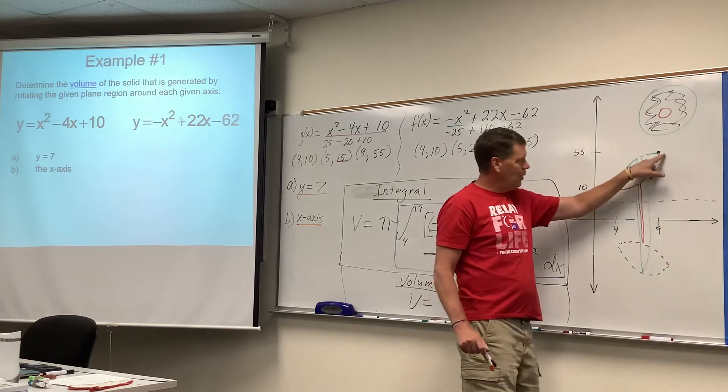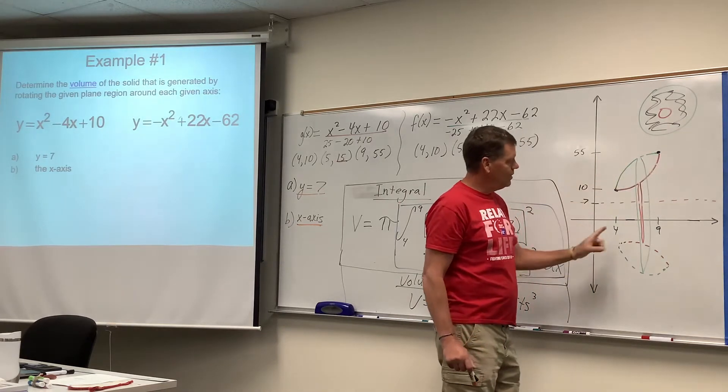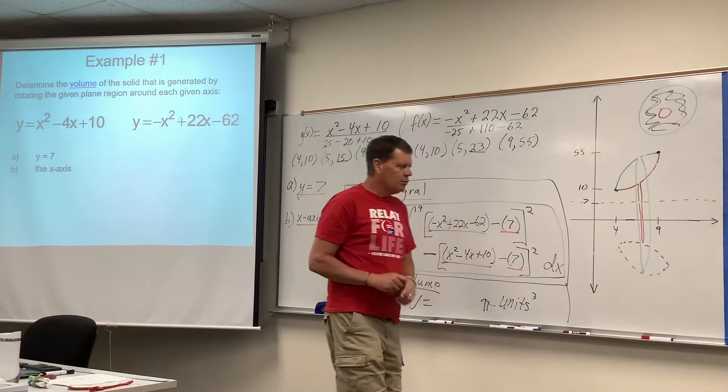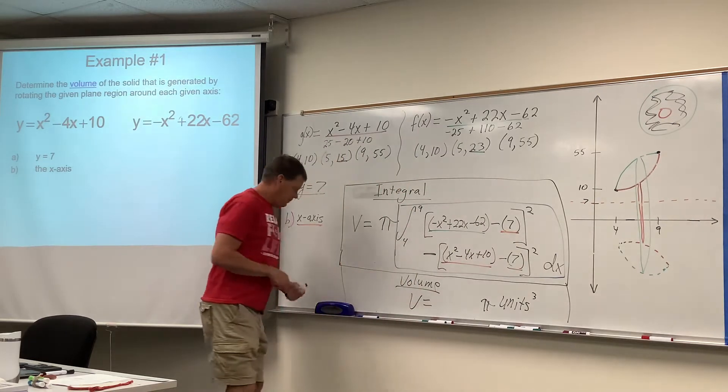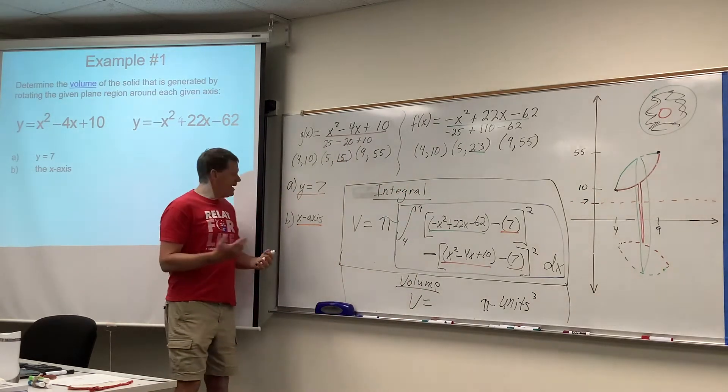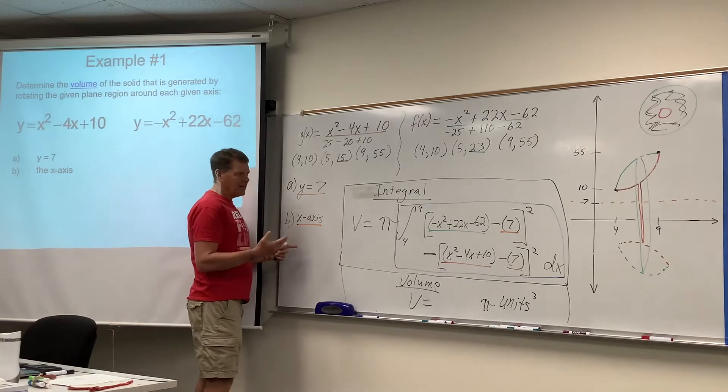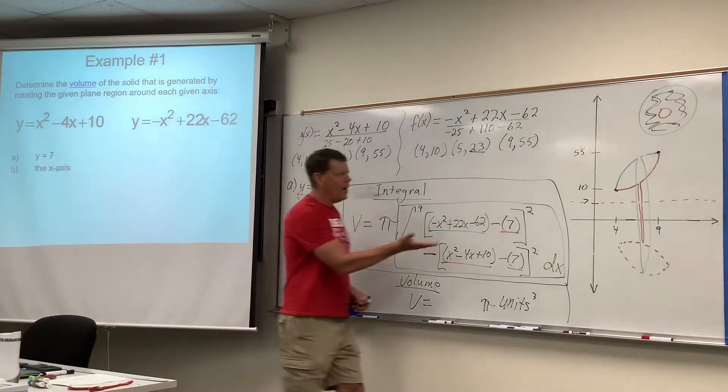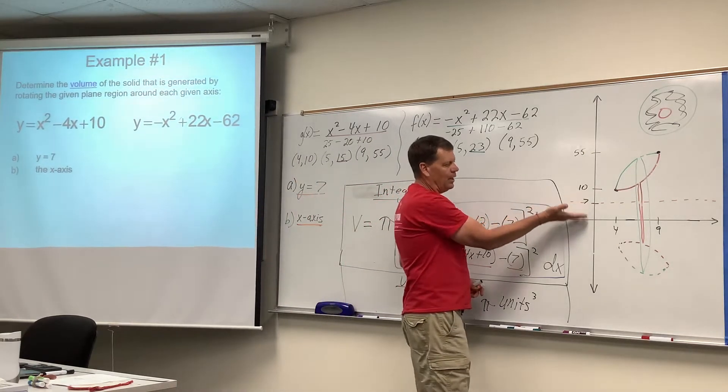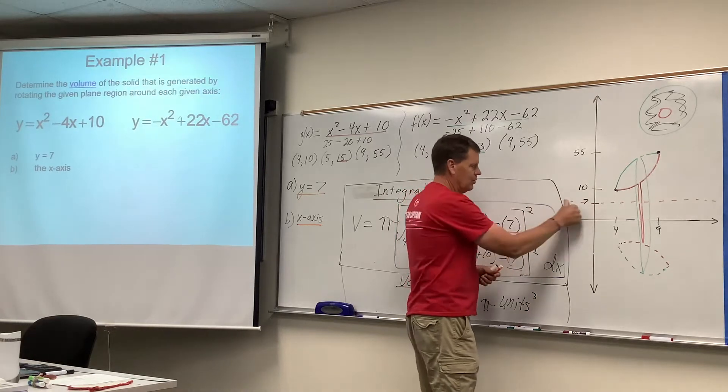We confirmed where they cross and all that. We tested a number in between. We've taken care of all those preliminary steps. Now, the x-axis is our new axis of revolution. So instead of y equals 7, we're down here on the x-axis.